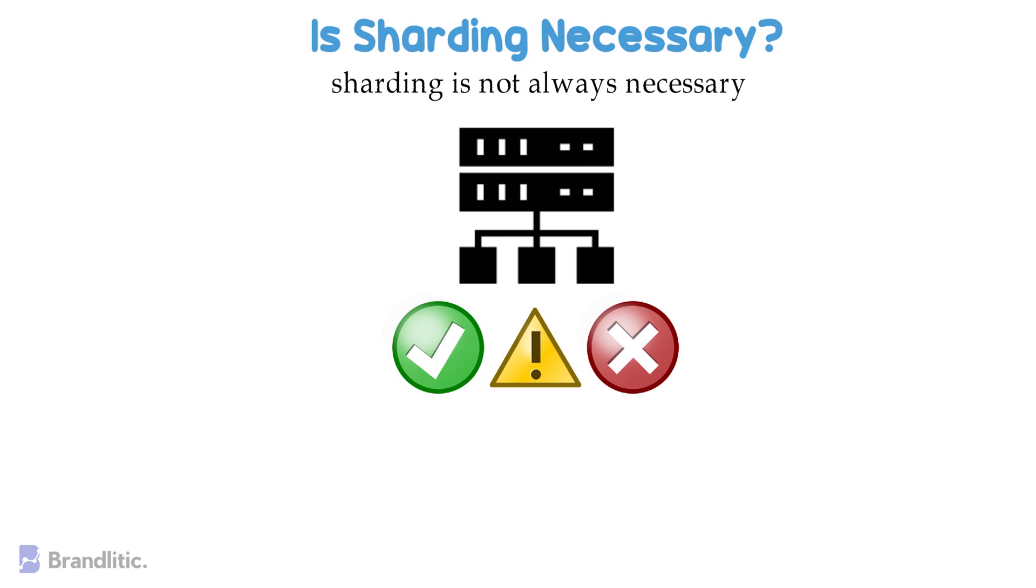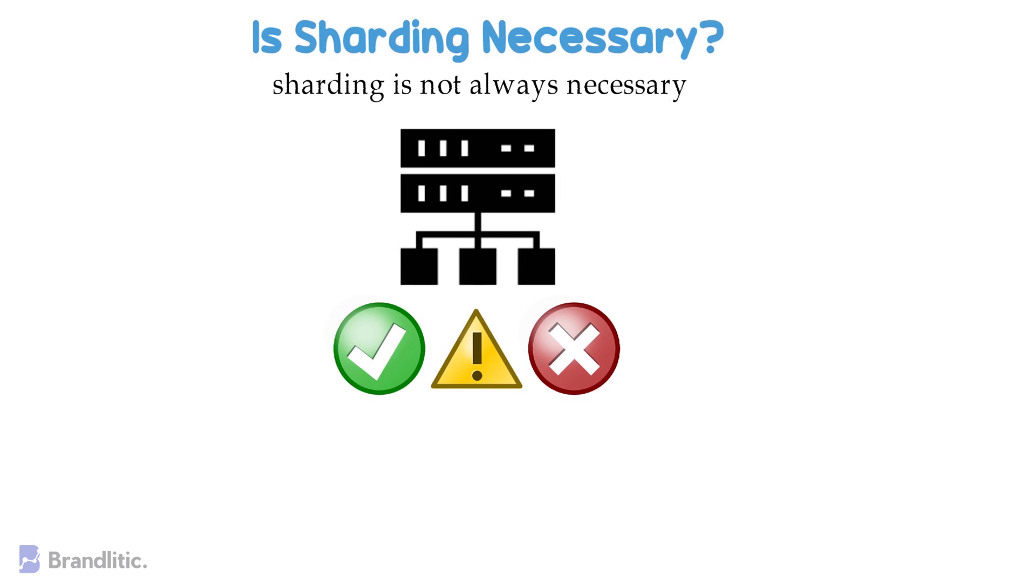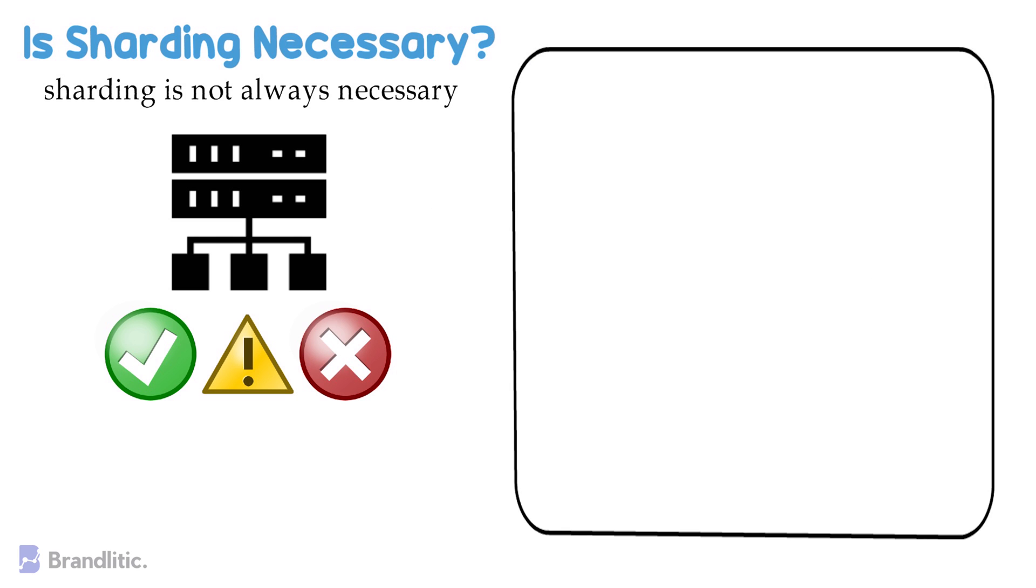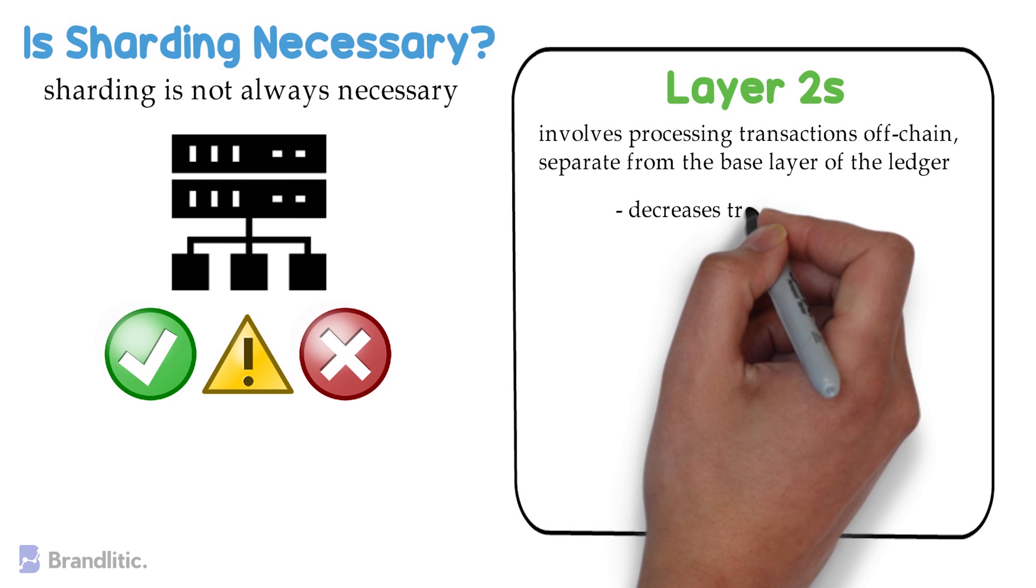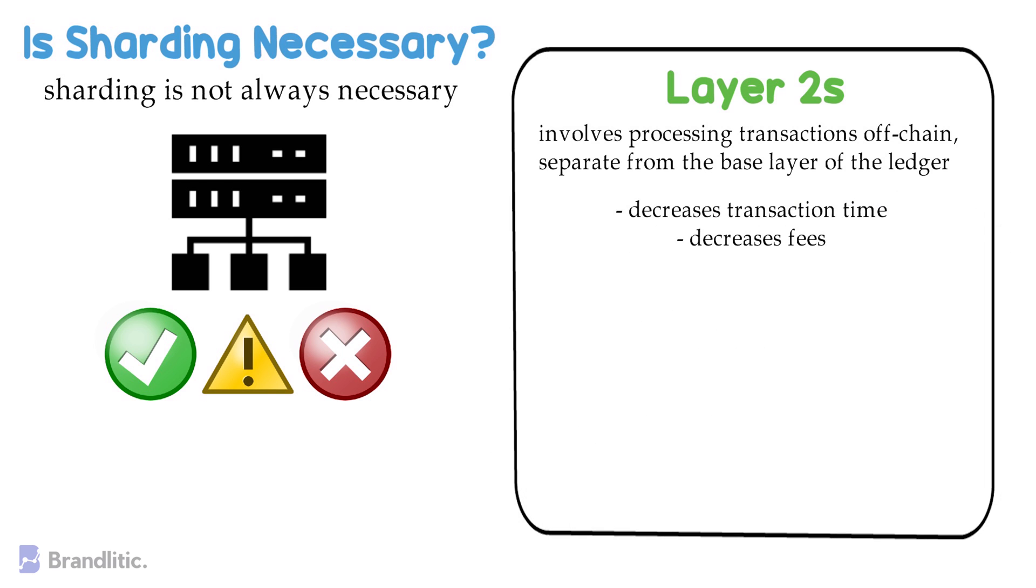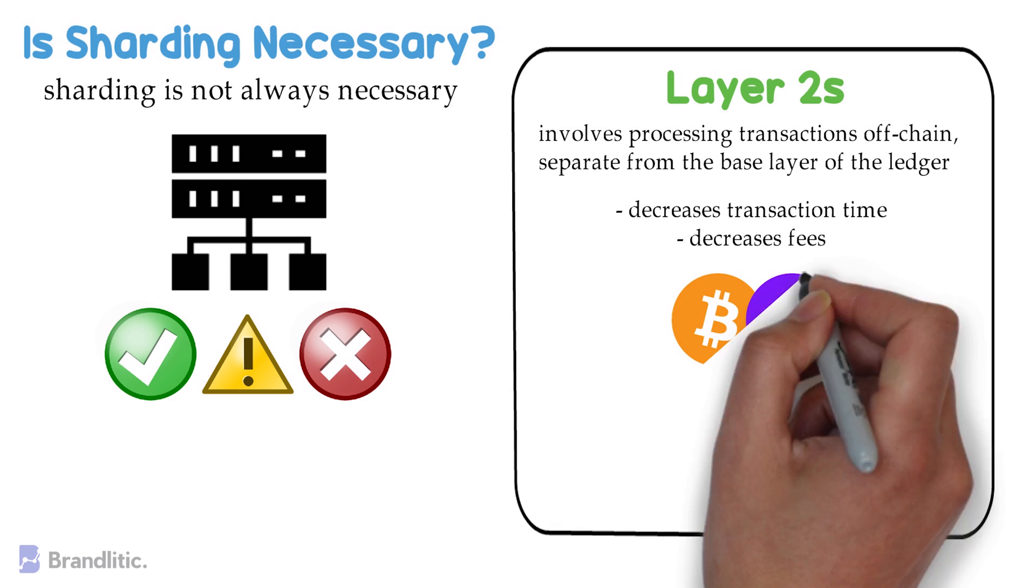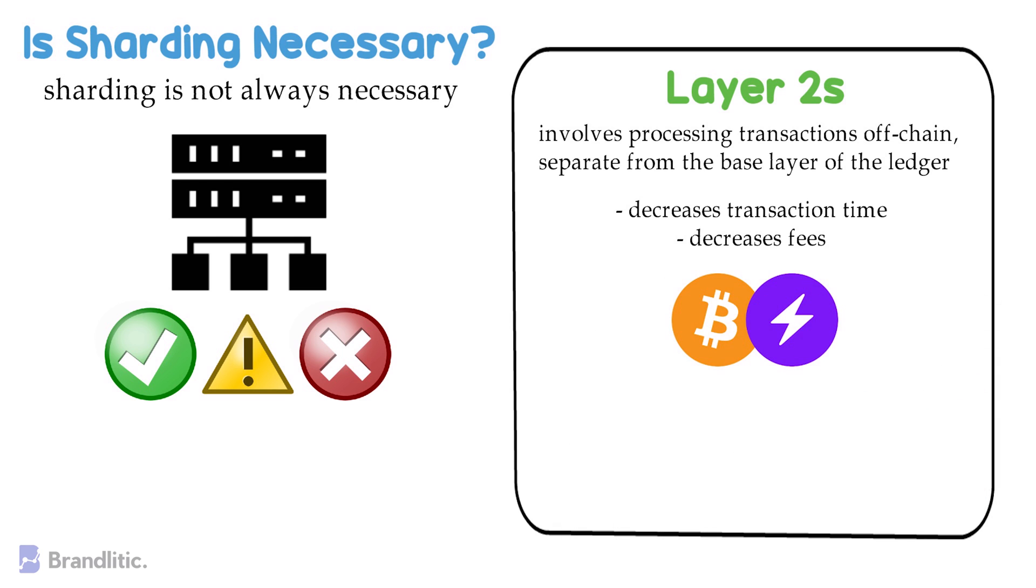Now, you might be thinking, what's an alternative to sharding in blockchain? Well, another method of scaling that has been growing in popularity lately is the use of Layer 2s. A Layer 2 is a solution that involves processing transactions off-chain, separate from the base layer of the ledger. This can decrease transaction times and fees dramatically. Bitcoin's Lightning Network is one such example of a Layer 2 solution. Here, Lightning allows for instant transactions that cost a fraction of a penny.